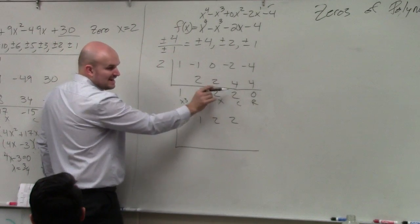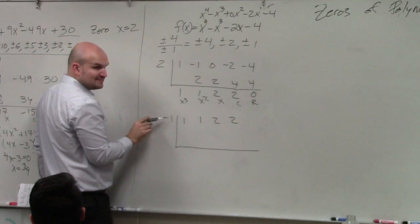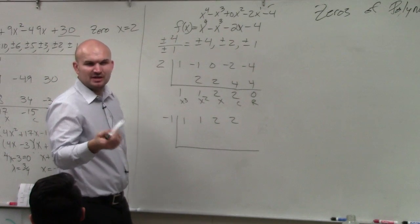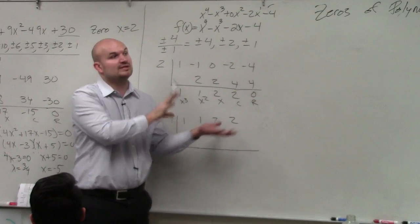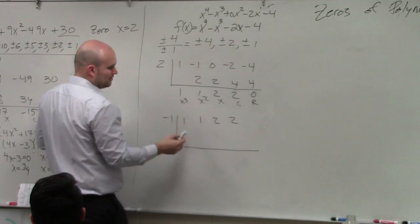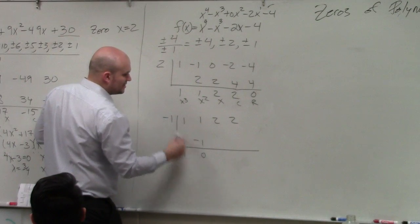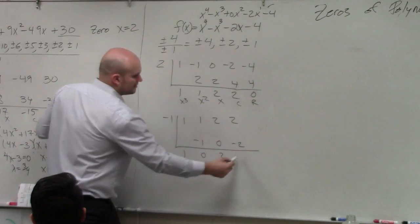So I basically take the answer, put it in another synthetic division, and now I do synthetic division with my other zero that I found by graphing. That's why using your graphing calculator can be helpful. The problem is simple enough where you could have factored it, but I want to show you guys what happens when you can't factor them, what you would want to do. So you bring down the 1. 1 times negative 1 is negative 1. 0, 0, 2, negative 2, 0.